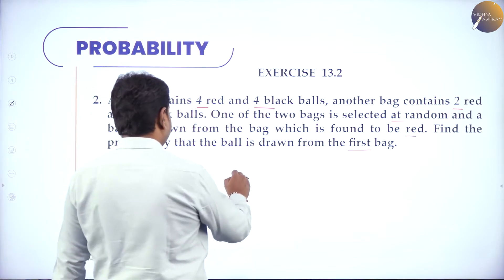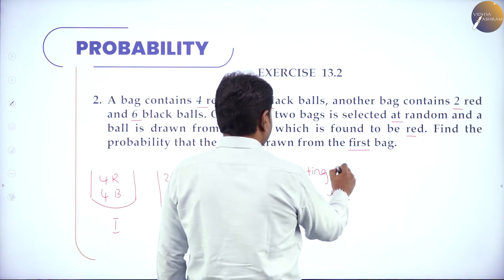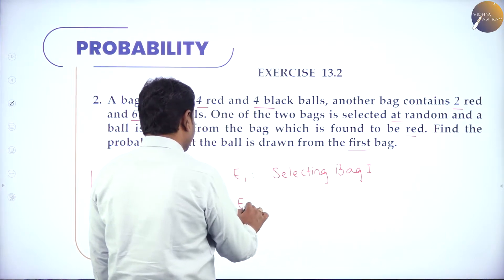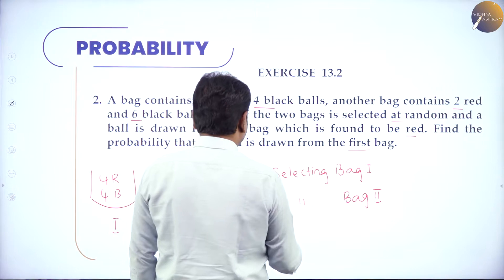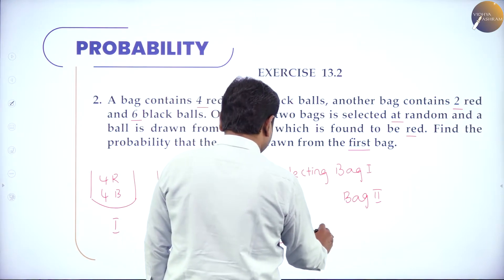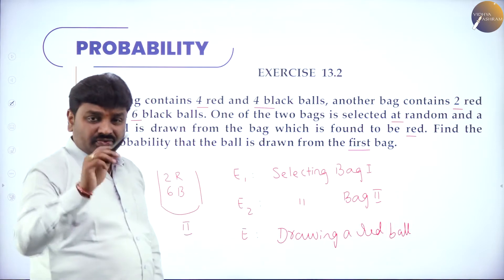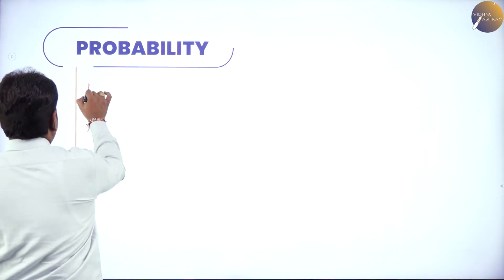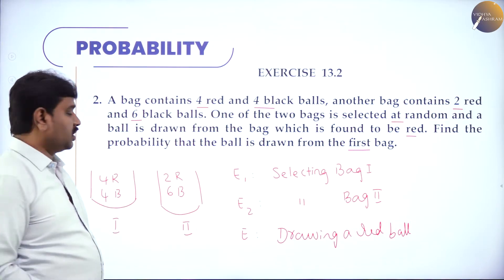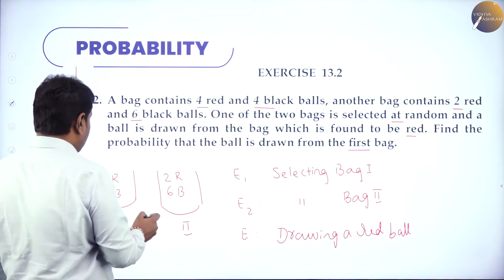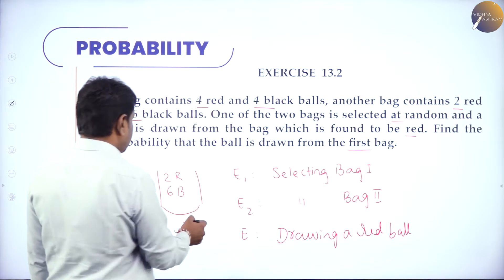Define events: E1 = selecting bag 1, E2 = selecting bag 2, E = drawing a red ball (common event). P(E1) = 1/2 (one first bag out of two bags). P(E2) = 1/2. P(E|E1) = probability of drawing a red ball from the first bag = 4/8 = 1/2. P(E|E2) = probability of drawing a red ball from the second bag = 2/8 = 1/4.